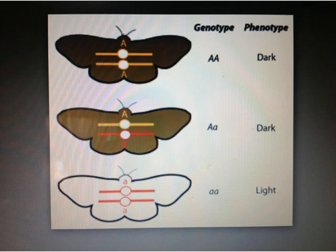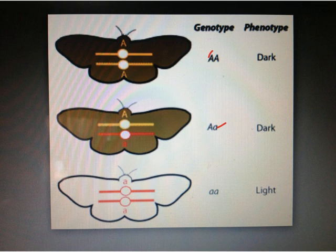Recall our previous lesson on genotypes and phenotypes of organisms. The genotype consists of the actual alleles that make up the gene for a particular trait. In this case, it is represented by the alleles capital letter A for dominant dark color, and the recessive small letter A for light color.